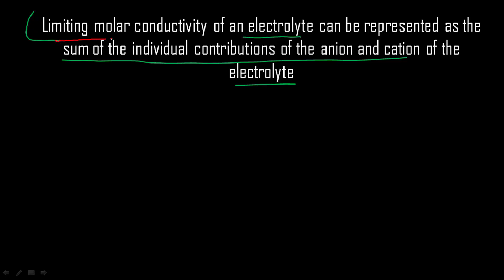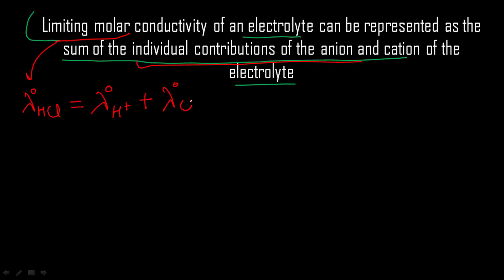First, it is talking about limiting molar conductivity. Let's say it is talking about limiting molar conductivity of HCl. The statement says it is the sum of individual contributions of the anion and cation — that means the limiting molar conductivity of HCl is the sum of the limiting molar conductivity of H⁺ ion and limiting molar conductivity of Cl⁻ ion.